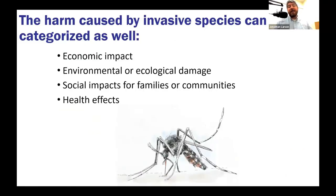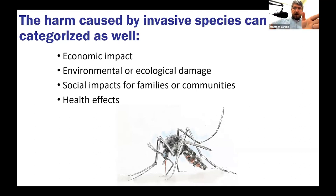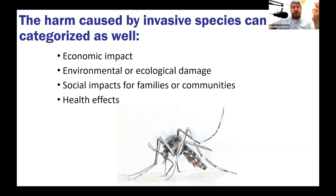When we talk about invasive species, we focus on harm. We can break that into different categories. The harm we focus on most often is economic impact — that's usually what people care about most. We are an anthropocentric species, very focused on ourselves and on the bottom line. Then we also talk about environmental or ecological damage, social impacts for families and communities, and health effects with particular invasive species.